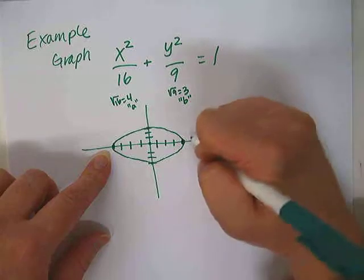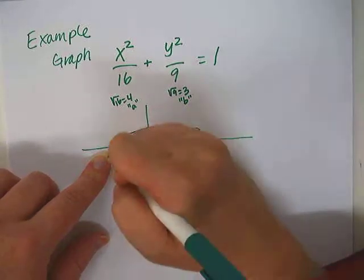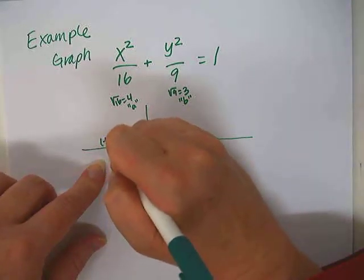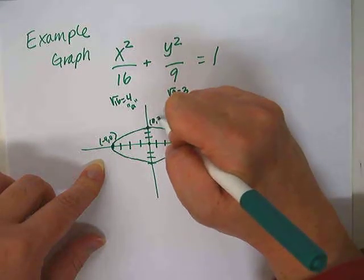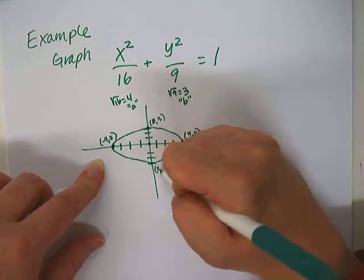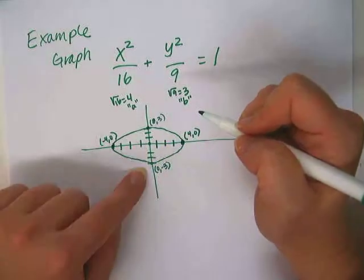So we have a vertex here at 4, 0, and there's another vertex here at negative 4, 0. We have this other point at 0, 3, and this other point here at 0, negative 3.